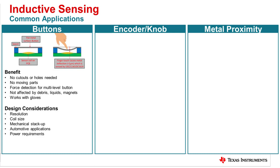Button configurations typically include a sensor PCB, a spacer, and a flat metal surface that deflects when a user presses onto the surface. The benefits of an inductive button approach include no cutouts or holes needed in manufacturing, the ability to detect different levels of force, being robust against debris, liquid, magnets, and being operable with gloves.